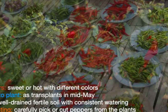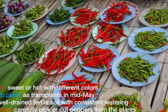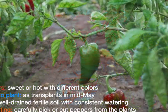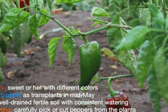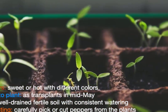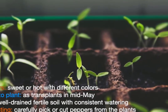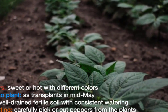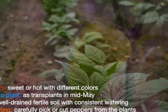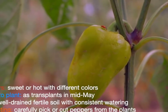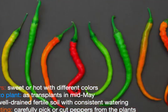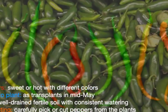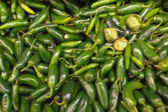Peppers are generally classified as sweet or hot and come in different colors. Peppers are usually set out as transplants in the garden in mid-May. Peppers thrive in well-drained, fertile soil. Consistent watering is preferred to avoid blossom drop. When harvesting, carefully pick or cut peppers from the plants. Use rubber gloves to harvest very hot peppers.